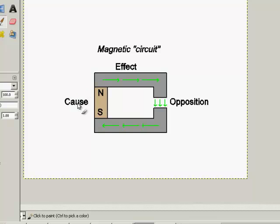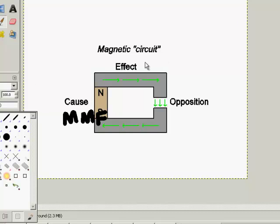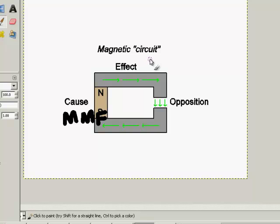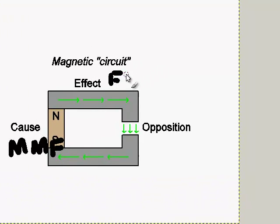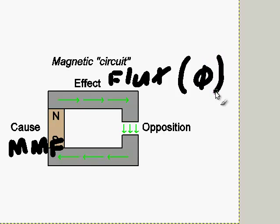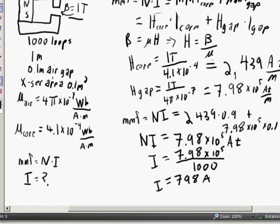So going back to our magnetic circuit, our cause is something called the MMF. And the effect over here is the flux, denoted by phi. And the opposition is the reluctance. So very analogous to the electric circuits.